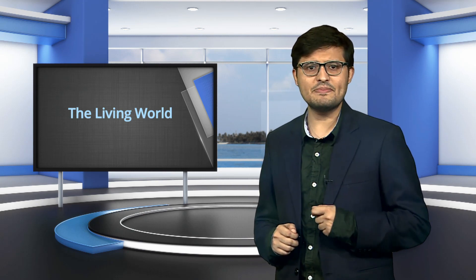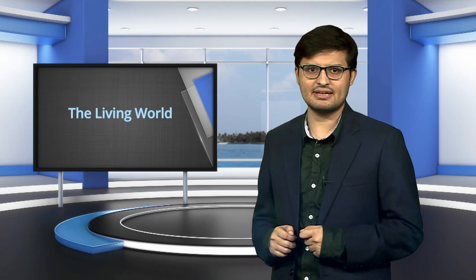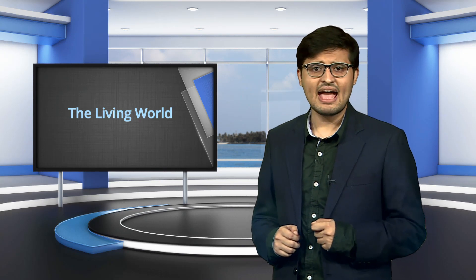Human beings belong to the species sapiens, grouped in the genus Homo, so the scientific name of human beings is Homo sapiens. Taxonomic aids are tools for the study of taxonomy. To identify various species, both laboratory and field studies are important. Information gathered about species needs to be stored for future studies, and actual specimens are collected, preserved and stored for verification. This helps in identification of species and their placement in the taxonomic hierarchy. Major aids include herbarium, botanical gardens, museums and zoological parks.